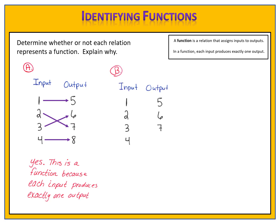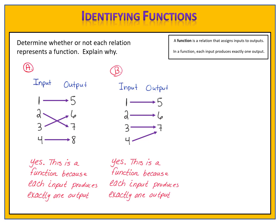Let's look at a second example, this time with the inputs 1, 2, 3, 4, and the outputs 5, 6, and 7. In this relation, input 1 produces the output of 5. Input 2 produces the output of 6. Input 3 produces the output of 7, and input 4 also produces the output of 7. Is this relation a function? Yes, it is, because each input produces exactly one output. You might be concerned that 3 and 4 both produce a 7, but that's okay. It's like when we had two separate buttons on the soda machine that gave you a root beer.